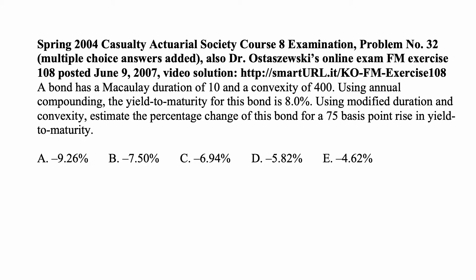Here's a problem for today for exam FM on financial mathematics. A bond has a Macaulay duration of 10 and a convexity of 400. Using annual compounding, the yield to maturity for this bond is 8%. Using modified duration and convexity, estimate the percentage change of this bond for a 75 basis point rise in yield to maturity.